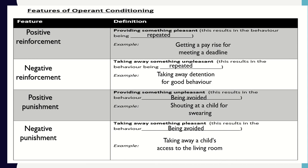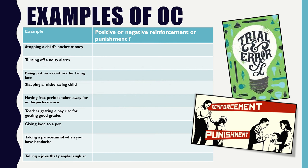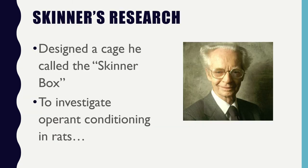Now that we're getting to grips with those concepts, pause the video and complete the example worksheet I gave you in class — I'm not going to give you the right answers to this, we'll mark them up in lesson. You decide whether the scenarios are examples of positive or negative reinforcement, or positive or negative punishment. We also need to understand Skinner's research in order to fully grasp operant conditioning.